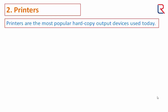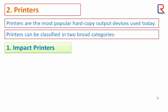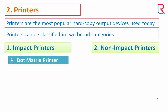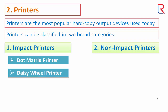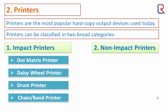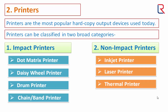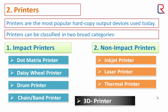Printers are the most popular hard copy output devices used today. Printers can be classified into two broad categories: impact printers and non-impact printers. Impact printers include dot matrix printer, daisy wheel printer, drum printer, and chain printer. Non-impact printers include inkjet printer, laser printer, thermal printer, and a special category: 3D printer. You can get details of printers in a separate video via the link in description.